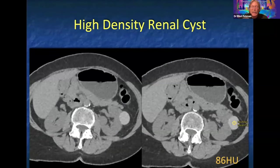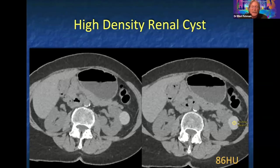One thing that helps avoid unnecessary workup of incidental findings is really knowing what you're looking for. For example, looking at this kidney case, there's a lesion in the left kidney that is well-defined and measures 86 Hounsfield units. With no contrast study, if a lesion measures over 70 Hounsfield units it's going to be benign — you don't need to do any further studies.